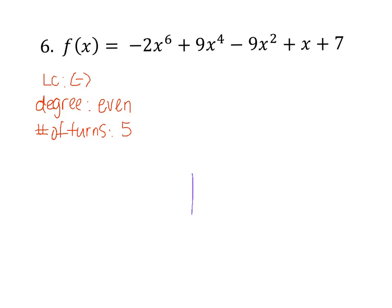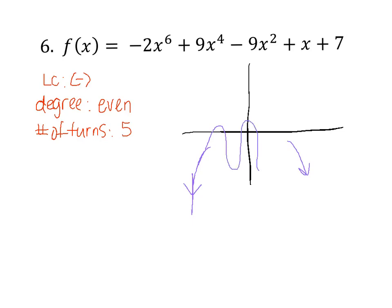Let's draw a graph with some axes and sketch what's going to happen. The leading coefficient is negative, so the end behavior means it's going down. The degree is even, so the beginning is going in the same direction — down again. The number of turns is 5, so starting from the beginning: up, down — 1, 2, 3, 4, 5. That's a rough drawing but it gives you an idea of what the graph is going to look like. Work problems 5 and 7, come to class with those done.